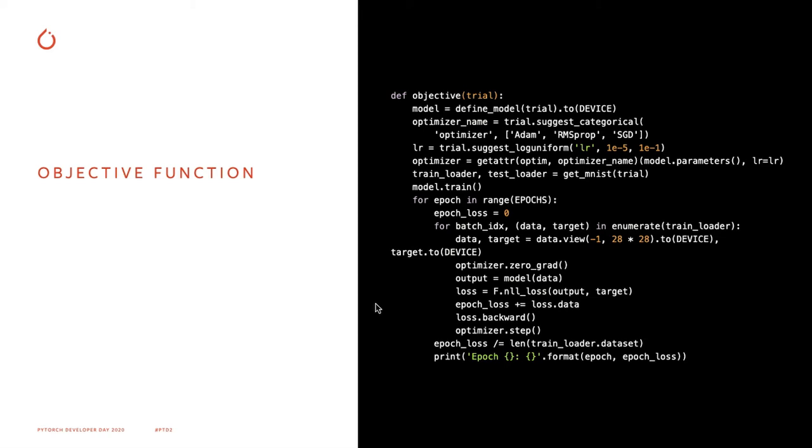Which then picks the optimizer from a list of Adam, RMSprop, and stochastic gradient descent. And then the next line gives us a log_uniform, which is a float which varies logarithmically to give us the full range of possible learning rates between 10 to the negative 5th and 10 to the negative 1.